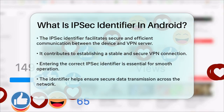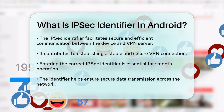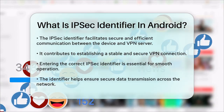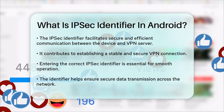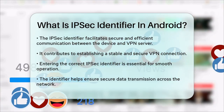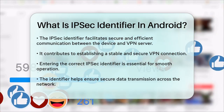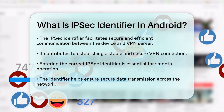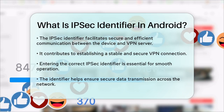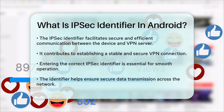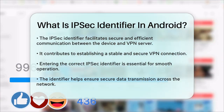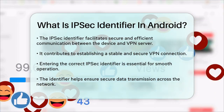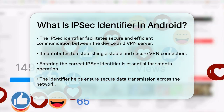In summary, the IPSec Identifier is a unique string that you enter when setting up an IPSec VPN on your Android device. It helps in identifying and authenticating your VPN connection, ensuring that your data is transmitted securely across the network. When setting this up, make sure to enter the correct string as specified by your VPN service provider to ensure everything works smoothly.